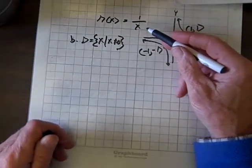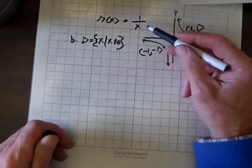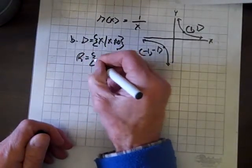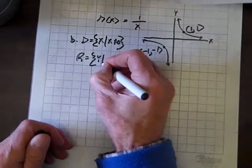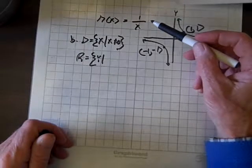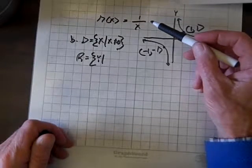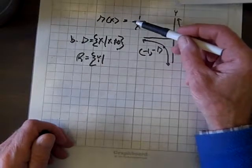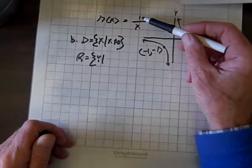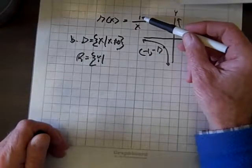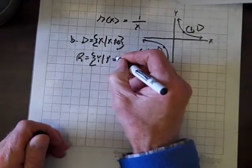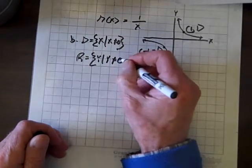Notice x can be any other value other than zero, and we'll get a real number back. As to the range, r equals the set {y} such that the only way r(x) could ever be zero is if the numerator could be zero. And the numerator is always one. It can never be zero, so y cannot equal zero.